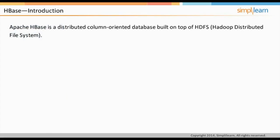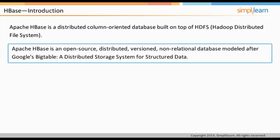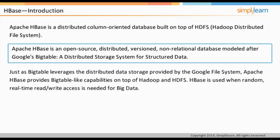Apache HBase is a distributed column-oriented database built on top of HDFS, or Hadoop Distributed File System. HBase can scale horizontally to thousands of commodity servers and petabytes of data. It is an open-source, distributed, and versioned non-relational database modeled after Google's BigTable, a distributed storage system for structured data. Just as BigTable leverages the Google File System, Apache HBase provides BigTable-like capabilities on top of Hadoop and HDFS.